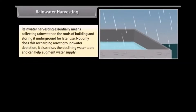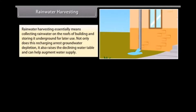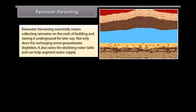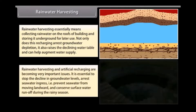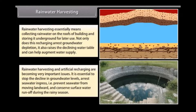Rainwater harvesting essentially means collecting rainwater on the roofs of buildings and storing it underground for later use. Not only does this recharging arrest groundwater depletion, it also raises the declining water table and can help augment water supply. Rainwater harvesting and artificial recharging are becoming very important issues — it is essential to stop the decline in groundwater levels, arrest seawater ingress (that is, prevent seawater from moving landward), and conserve surface water runoff during the rainy season.